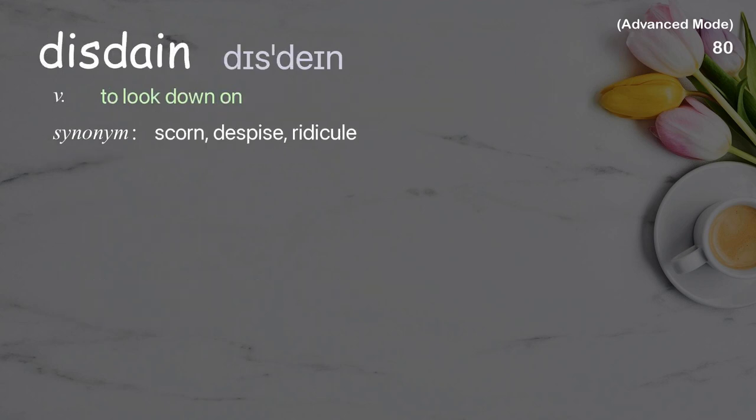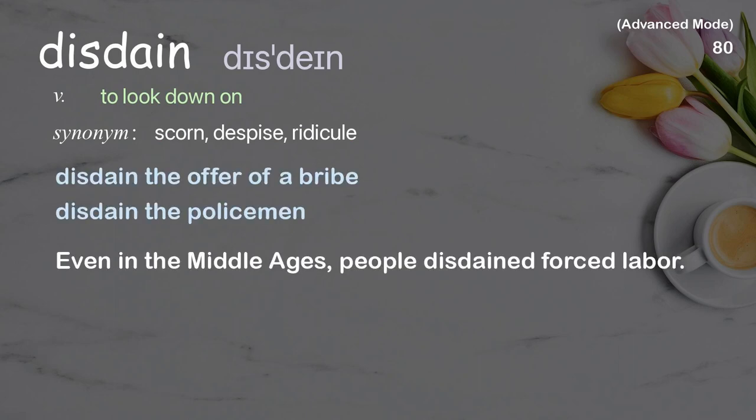Disdain: to look down on. Examples: disdain the offer of a bribe, disdain the policeman. Even in the Middle Ages, people disdained forced labor.